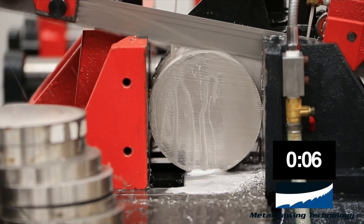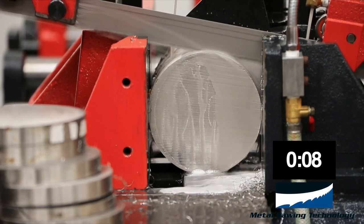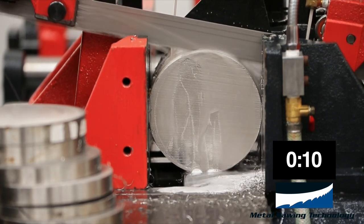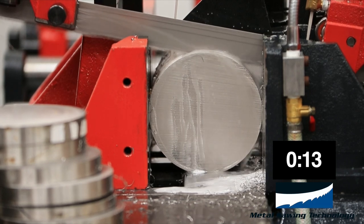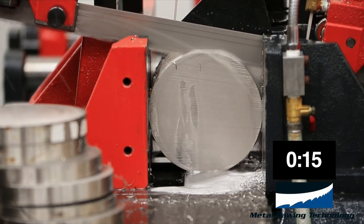This cut on 304 stainless will typically take about 15 to 20 minutes with the standard bi-metal M42 band. We're going to try to cut it a little bit faster with the 304 with the carbide tip.